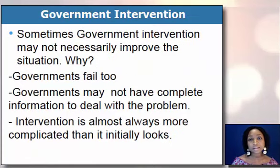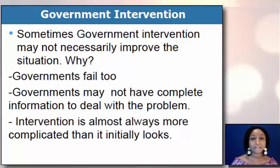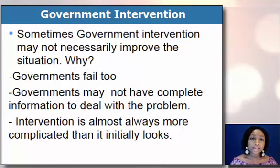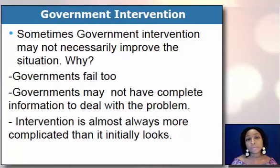Sometimes, when things do not go as expected to have the most socially desirable outcomes, we have government intervening. And when government intervenes, it's most of the time to fix externalities. Externalities are when people make decisions that have an impact on a third party.